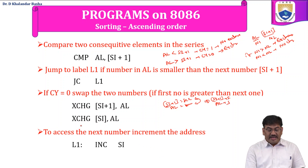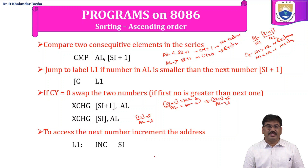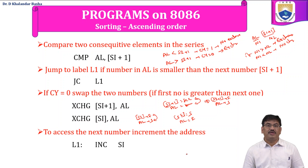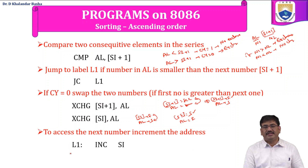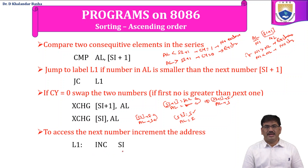Then execute 'XCHG [SI], AL'. SI holds the first number and AL holds the second number. After exchanging, SI will contain the second number and AL will contain the first number. The contents of SI+1 and SI are now swapped. After this exchange check, to advance to the next number location, increment SI using the INC SI instruction.